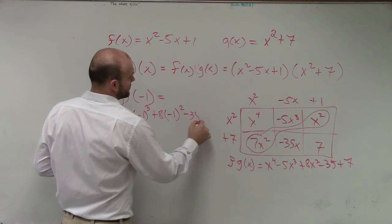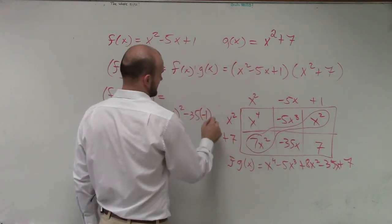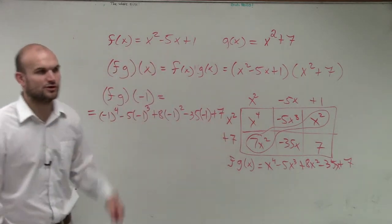So that is going to equal negative 1 to the 4th minus 5 times negative 1 cubed plus 8 times negative 1 squared minus 35x plus 7. Right. That's a lot of work, isn't it?